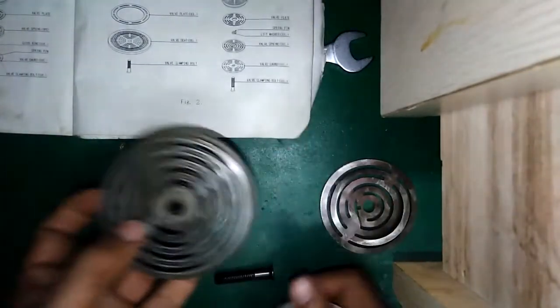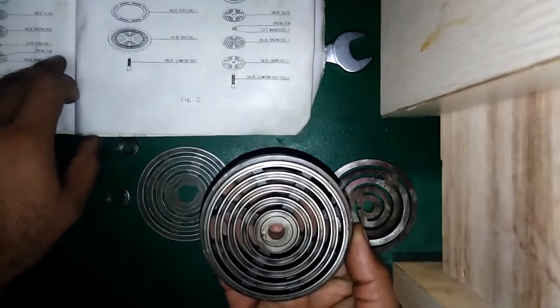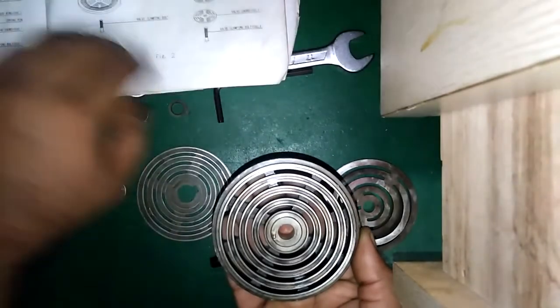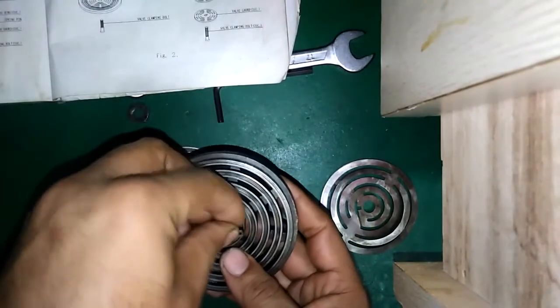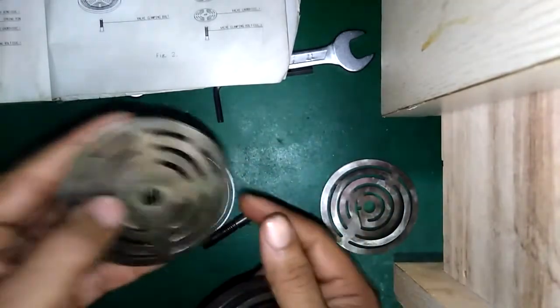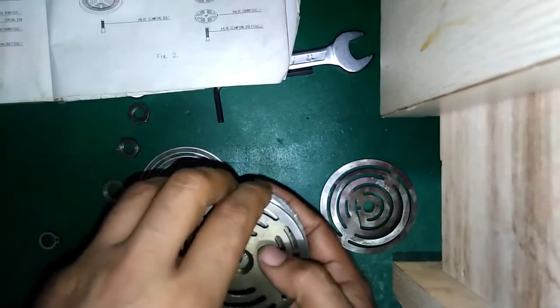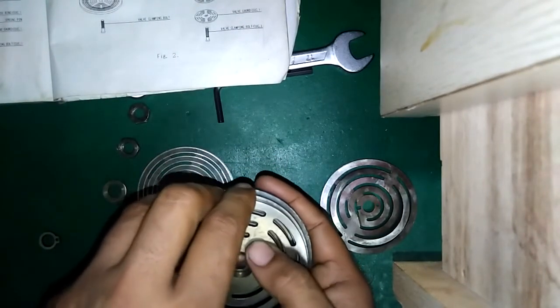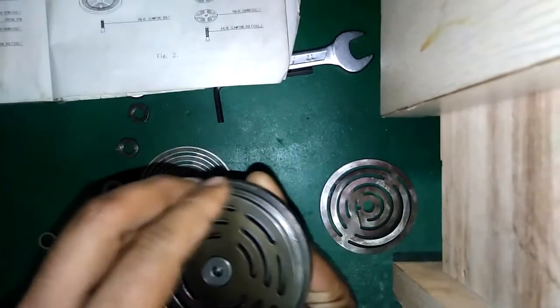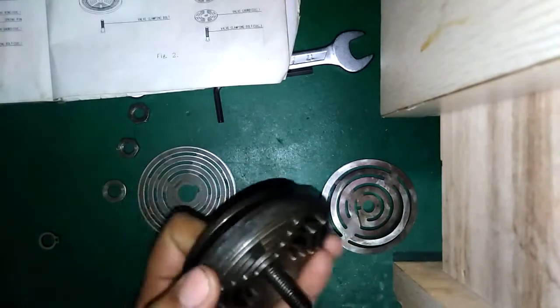But the things will be arranged in this way. Take the valve seat section and place it. For the good assembly of the valve, place the parallel spring pin. Now make a mark that the spring pin hole is aligned. I will show you.